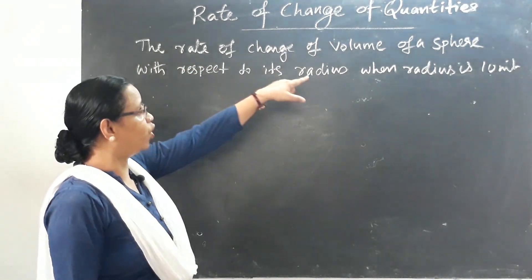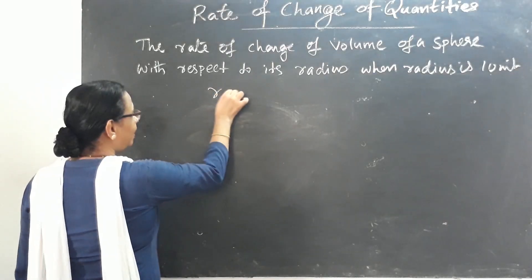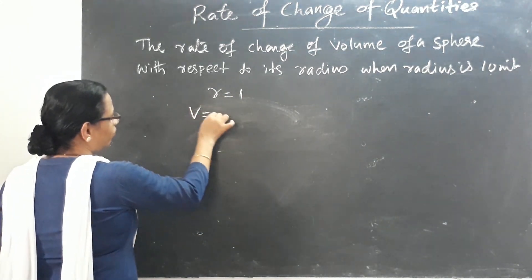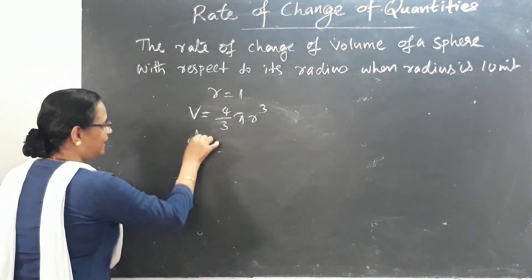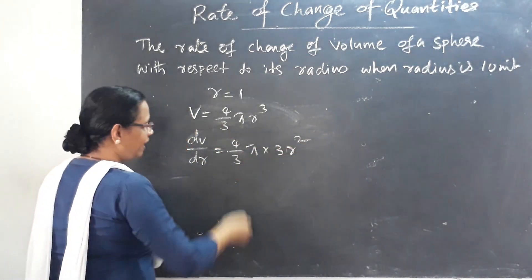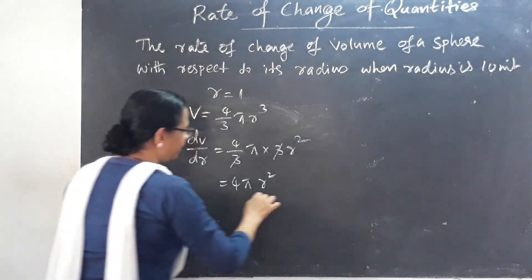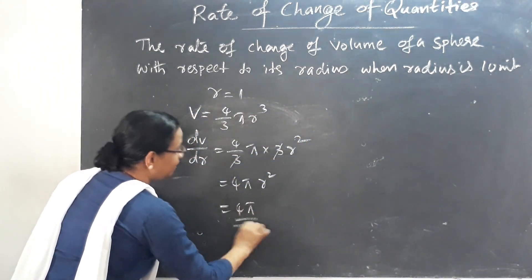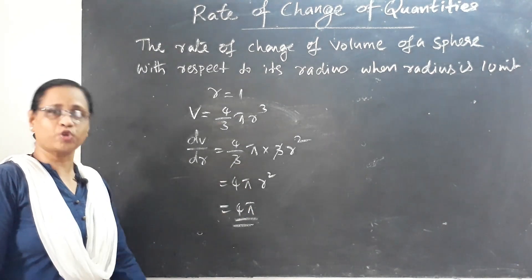The rate of change of volume of a sphere with respect to its radius, when R = 1 unit. The volume of a sphere is V = (4/3)πR³. Differentiating, dV/dR = (4/3)π × 3R² = 4πR². When R = 1, dV/dR = 4π square units.